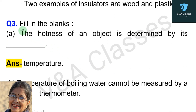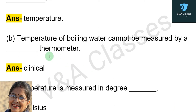Question number three: fill in the blanks. First: the hotness of an object is determined by its — answer: temperature. Second: the temperature of boiling water cannot be measured by a — thermometer. Answer: clinical.